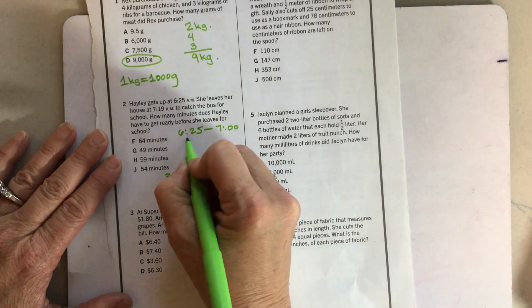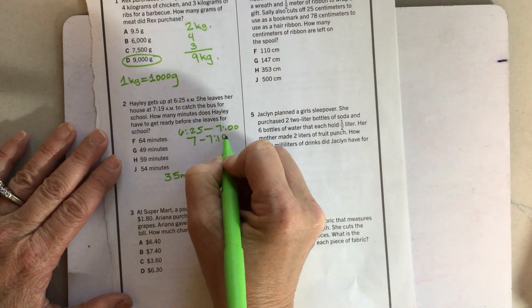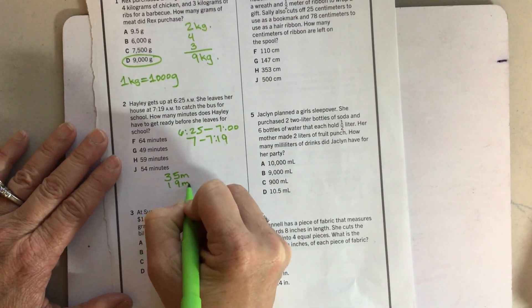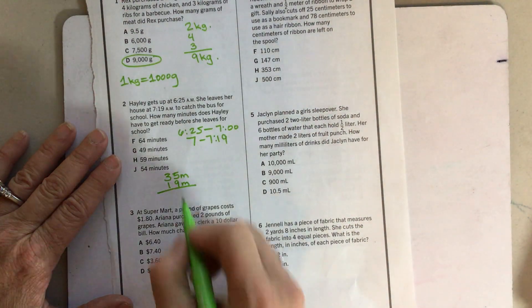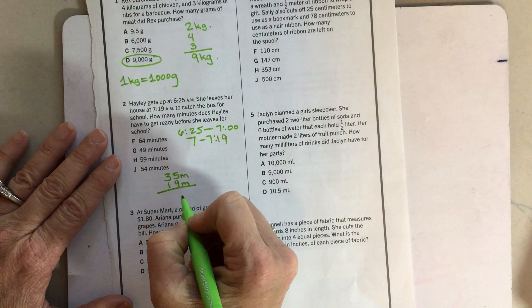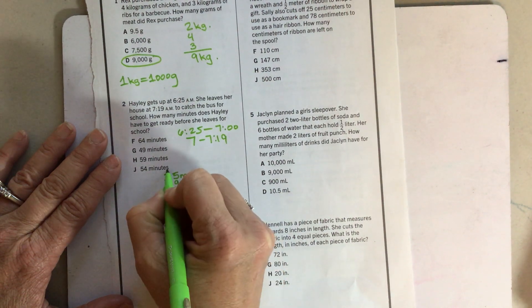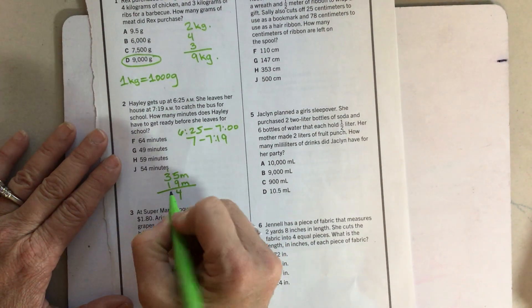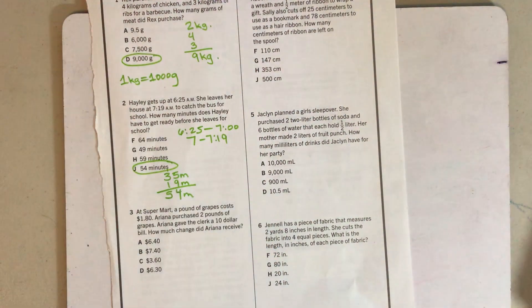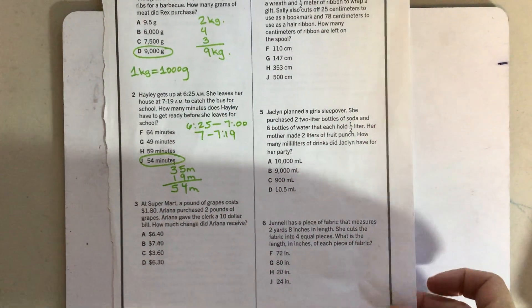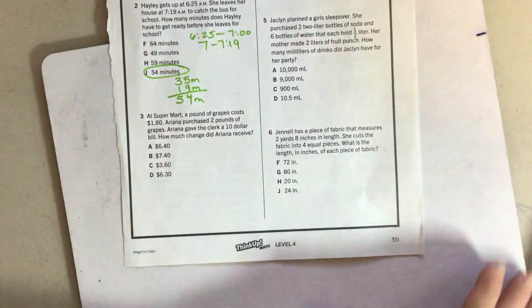So if she gets up at 625, I think of it as 625 to 7 o'clock, because that's the next major hour, is 35 minutes. And then 7 to 719 is 19 minutes. And then when I add 35 and 19, that is 54 minutes. That is my answer. That one was not too hard.